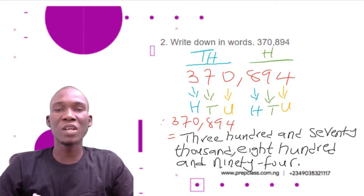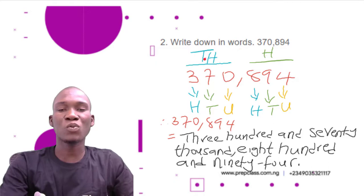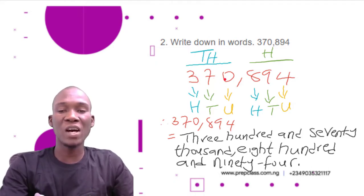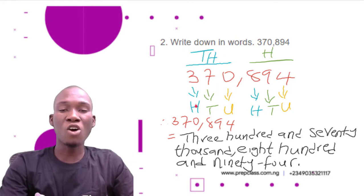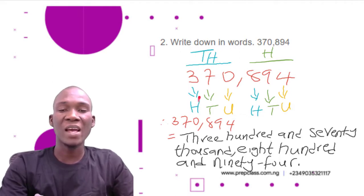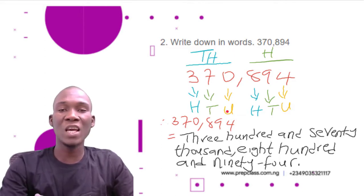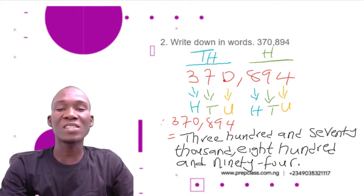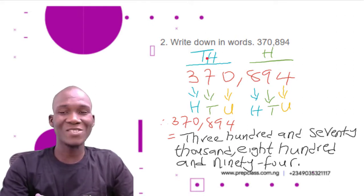We can further break each part into place values. For the thousands part, 370 has: 0 in units, 7 in tens, 3 in hundreds. So we pronounce this as three hundred and seventy — and since this is under thousands, we call it three hundred and seventy thousand. Now let's move to the next part: 894.